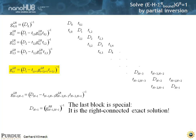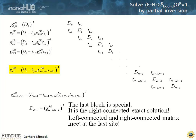You can do the same thing and march through the whole structure and connect to the right. Then if you do that for the very last site, this last block is special — it is right-connected already, it's the right-connected solution. That means if you marched all the way down here, you've obtained one true block of G^r — that's the one matrix block that is the true inverse block.